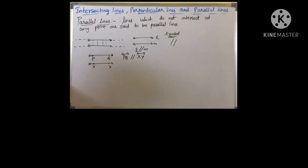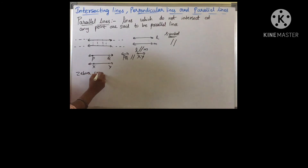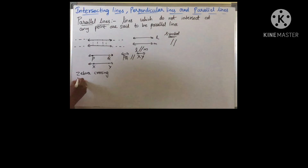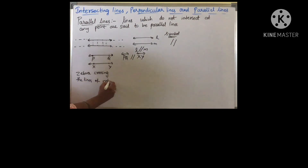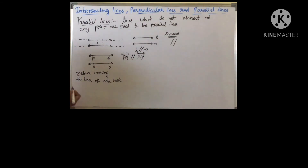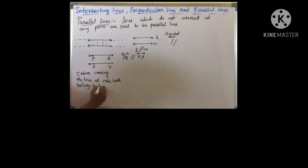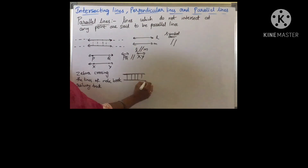We can see parallel lines in everyday life: zebra crossings, the lines of a notebook, and a very good example of parallel lines is a railway track. The two rails of the railway track are parallel — they never meet.